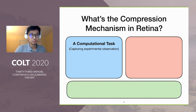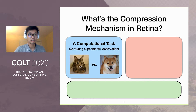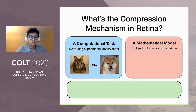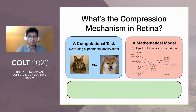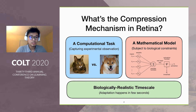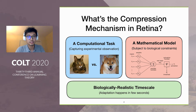The first one is the computational task — we have to identify the right task that captures the experimental observation, for example, a classification problem. Second, we have to find a good mathematical model to work on; such an arithmetic model can be implemented under biological constraints. Third, the mechanism we found should satisfy the biologically realistic time scale — the adaptation happens only in a few seconds and very efficiently.